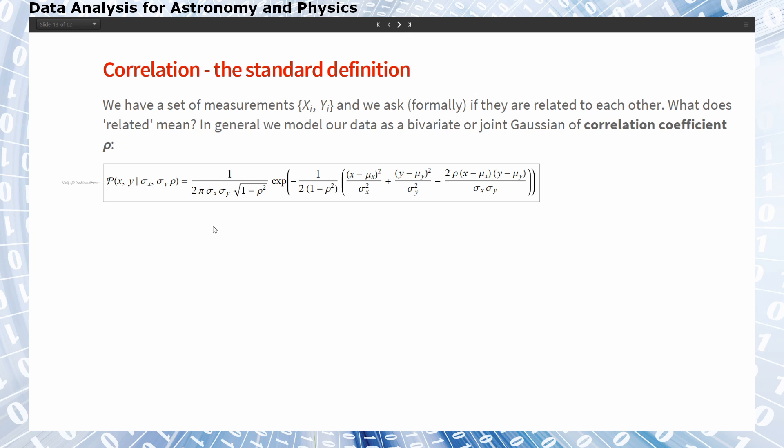So what does related mean? Let's look, for example, at a general model where we model our data as a bivariate or joint Gaussian of a correlation coefficient rho.